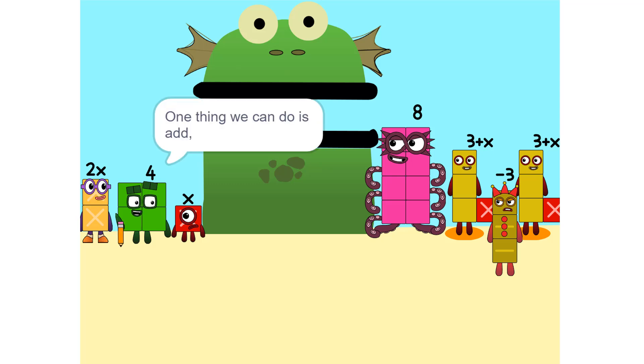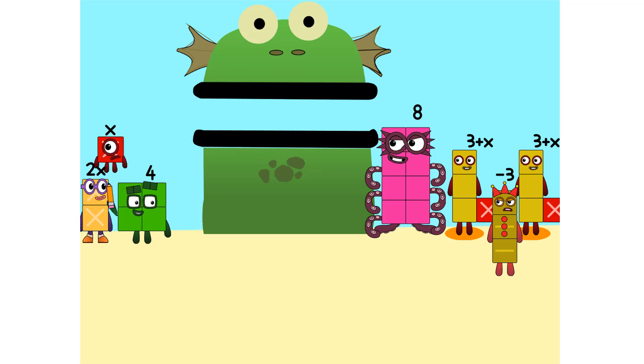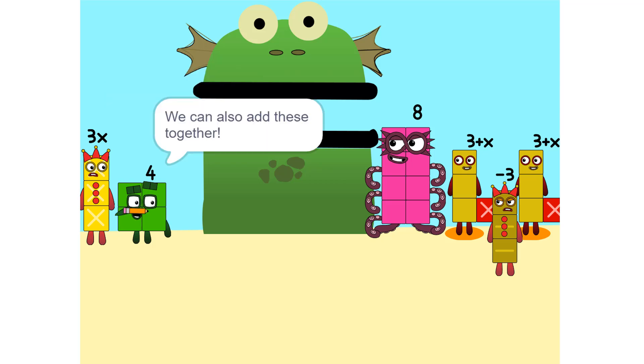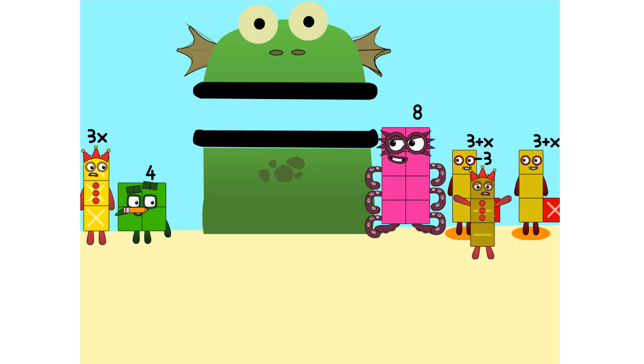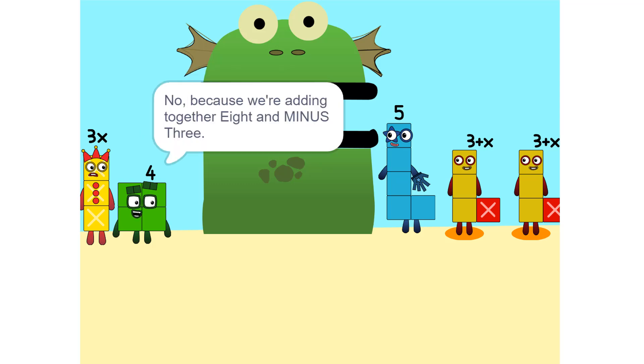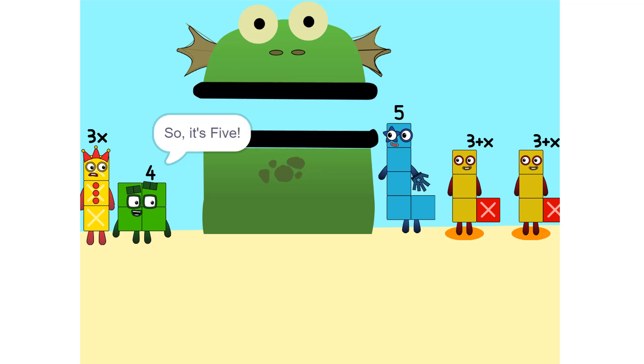One thing we can do is add these two together. How did you do that? We weren't even touching. They don't have to be. Could we do it if we were touching? Yeah. We can also add these together. Five. Wouldn't it be 11 since 8 plus 3 is 11? No, because we're adding together 8 and minus 3, or negative 3. So it's 5. Oh.